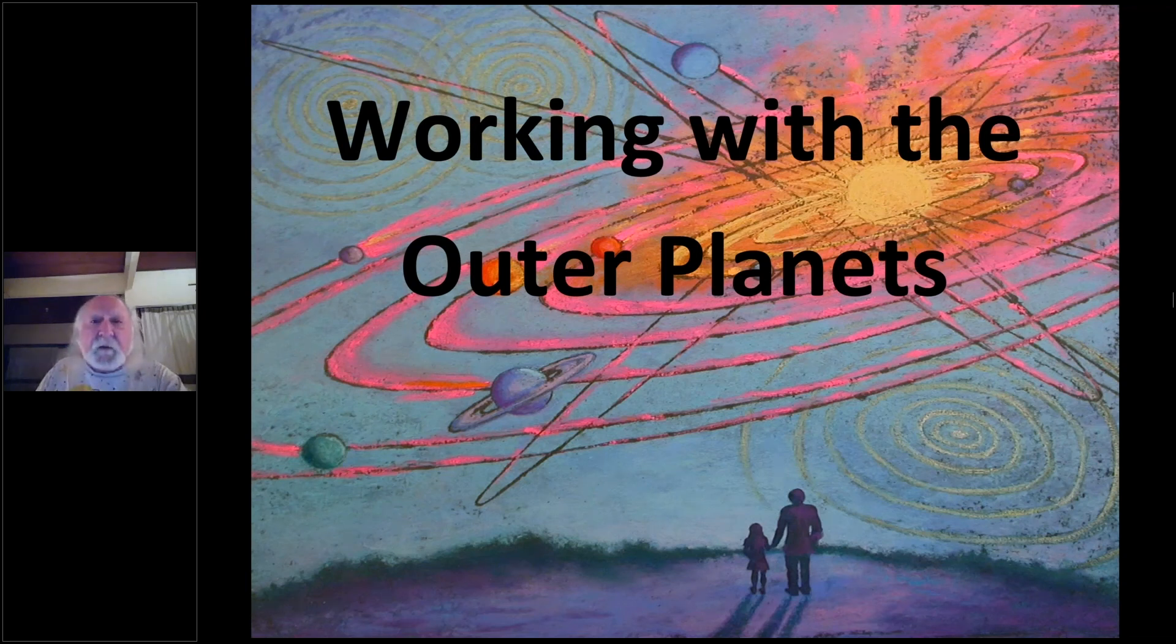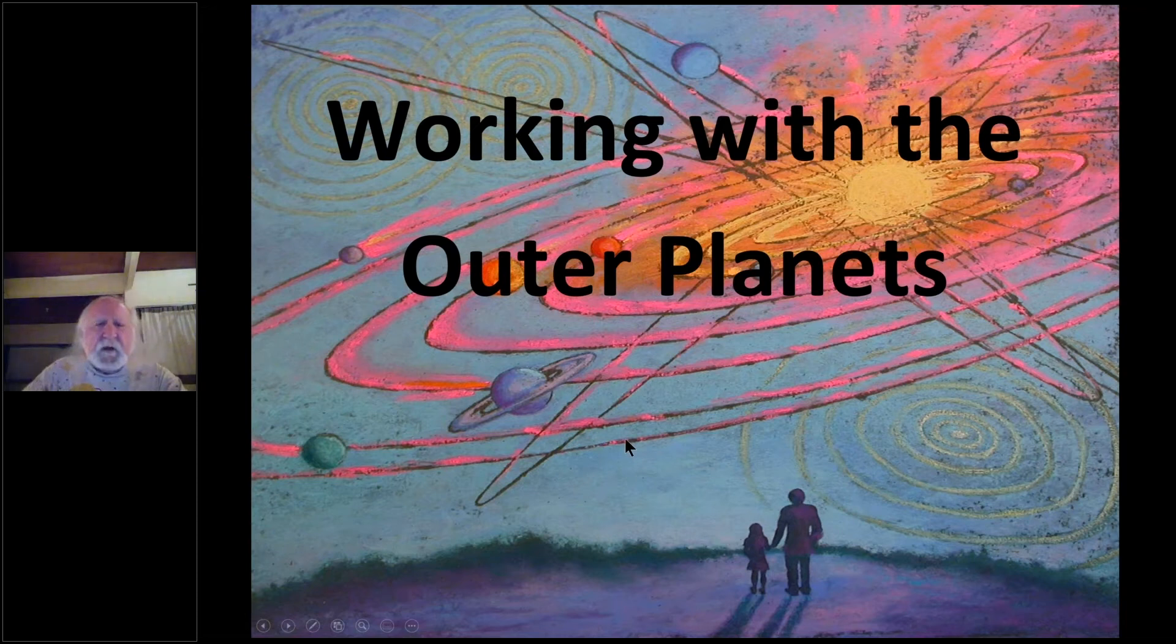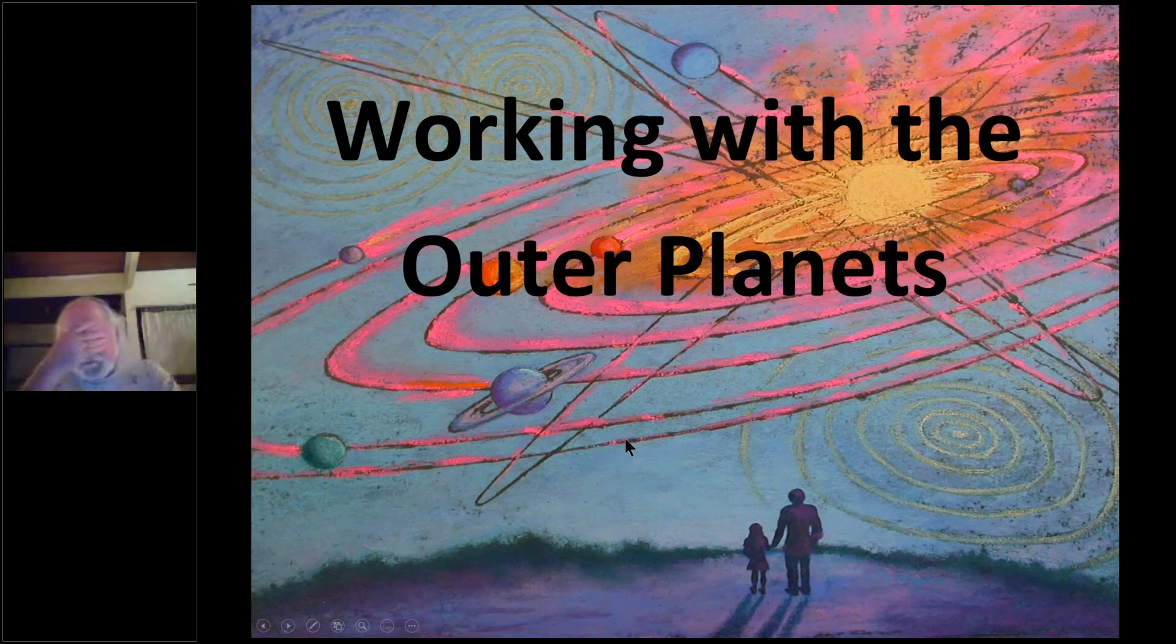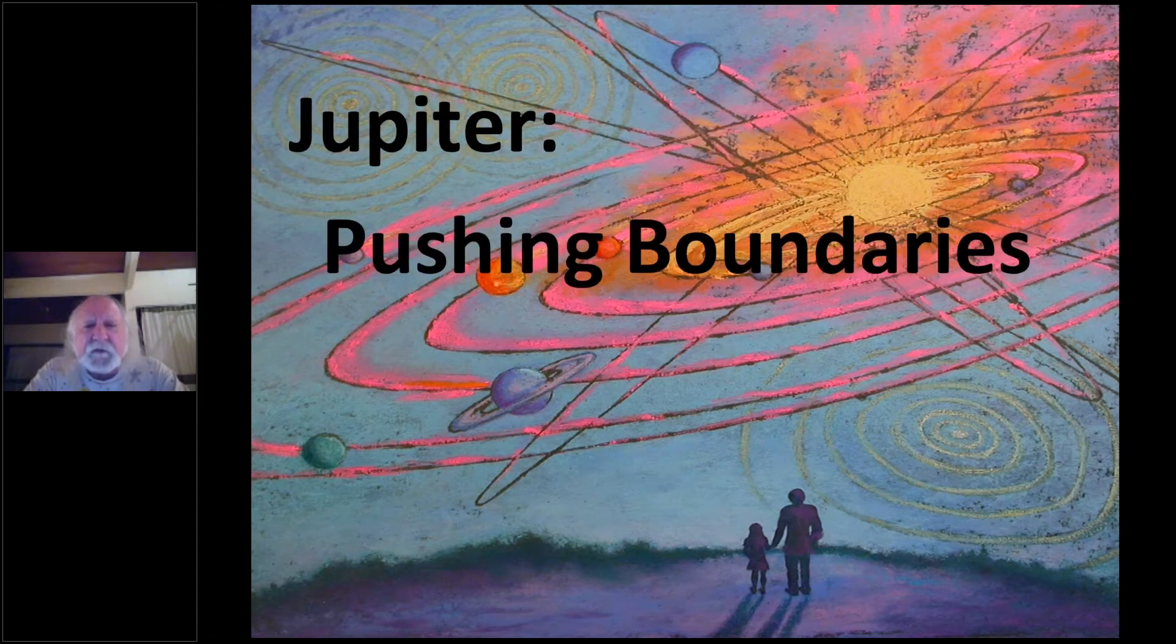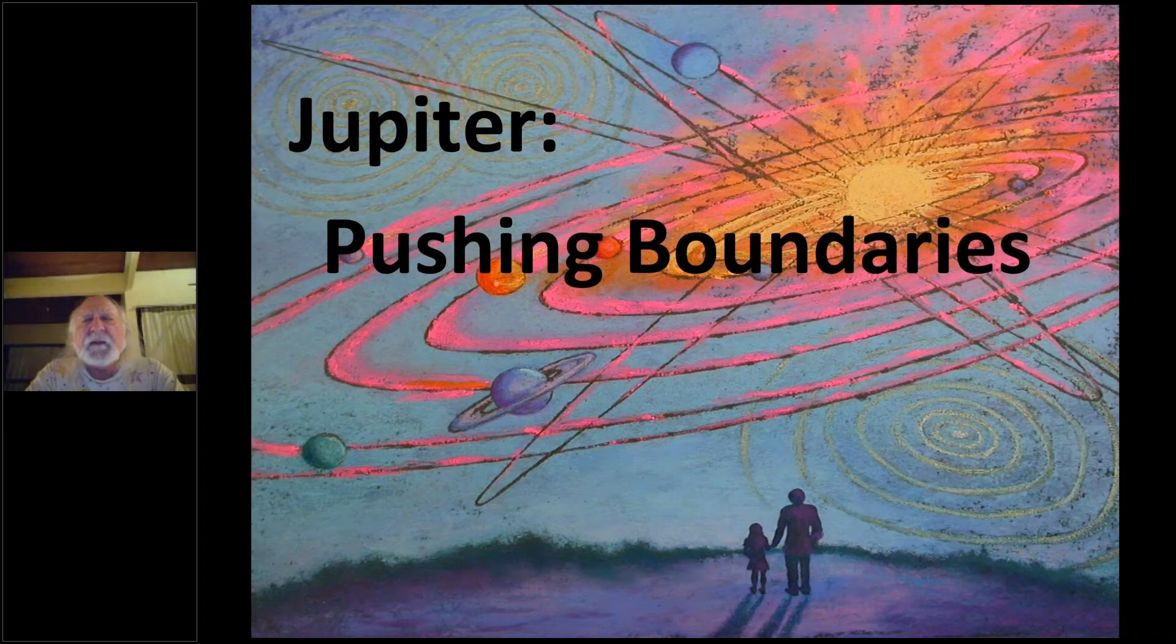We are talking today about outer planets, and I want to work our way from Jupiter outward. Normally, Jupiter and Saturn is the first pair of planets that go out into the social realms. Even though Mars is outside of the orbit of Earth, its astronomical proximity enables us to still refer to it as a personal planet.